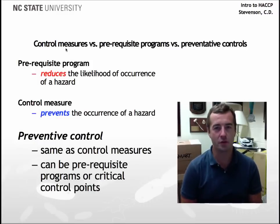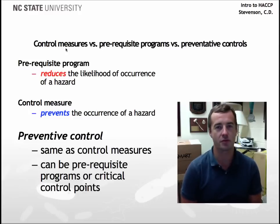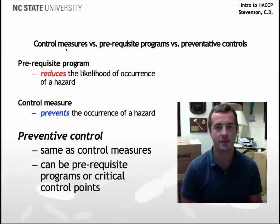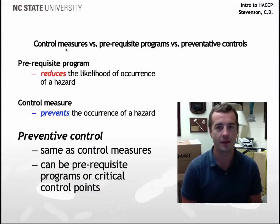To further complicate things, we now have a new term in food safety called preventive controls. This came into play with the signing of the Food Safety Modernization Act. My opinion is that preventive controls are essentially the same thing as a control measure — they can be prerequisite programs or critical control points, as we'll talk about later in the class. I think the new term was introduced because previously many companies, although effective at controlling critical control points, were not as effective at administering their prerequisite programs. So the focus was to introduce preventive controls to emphasize that prerequisite programs themselves should also be administered in a way that prevents the occurrence of a food safety hazard.